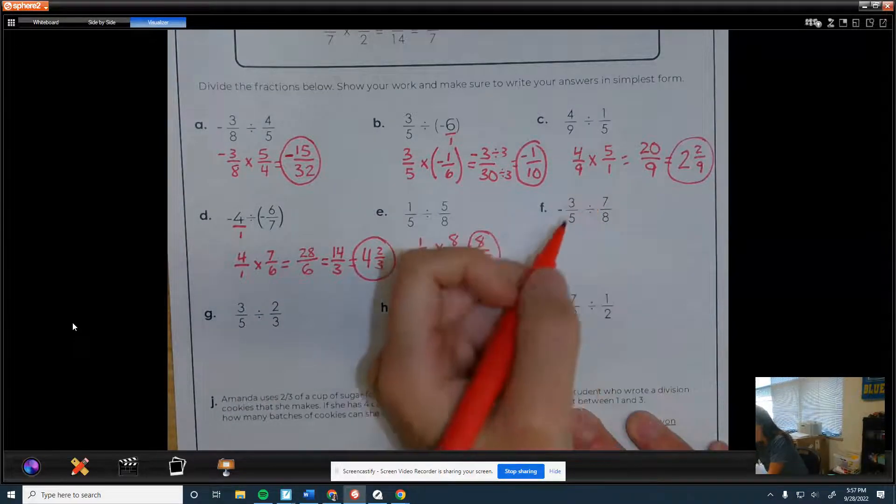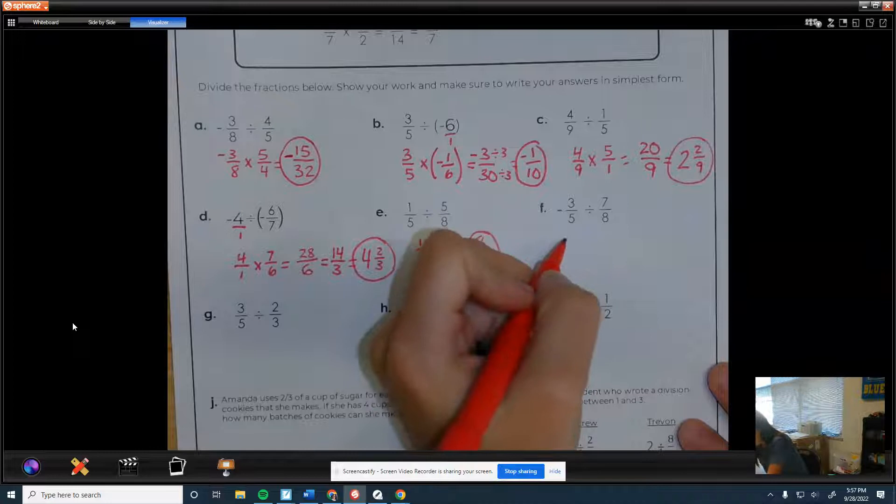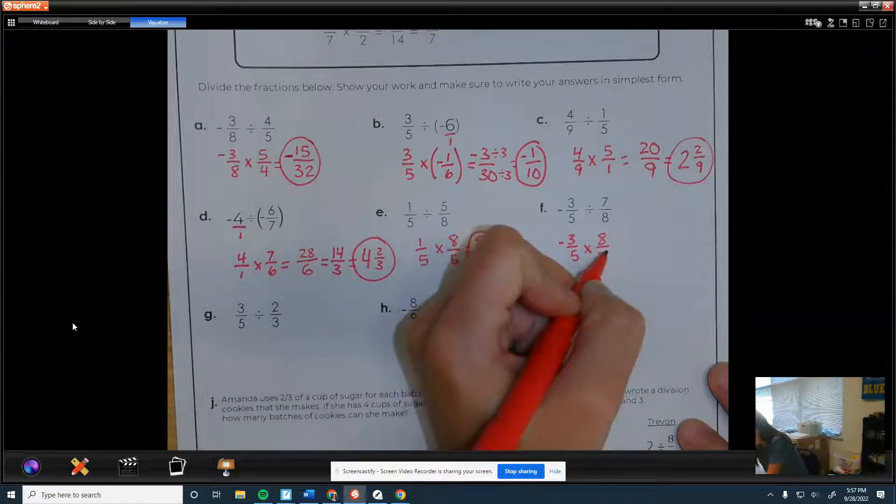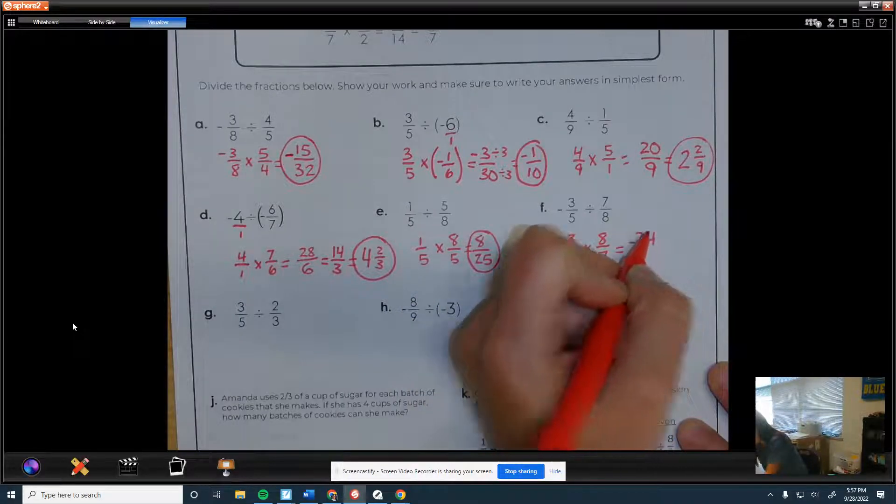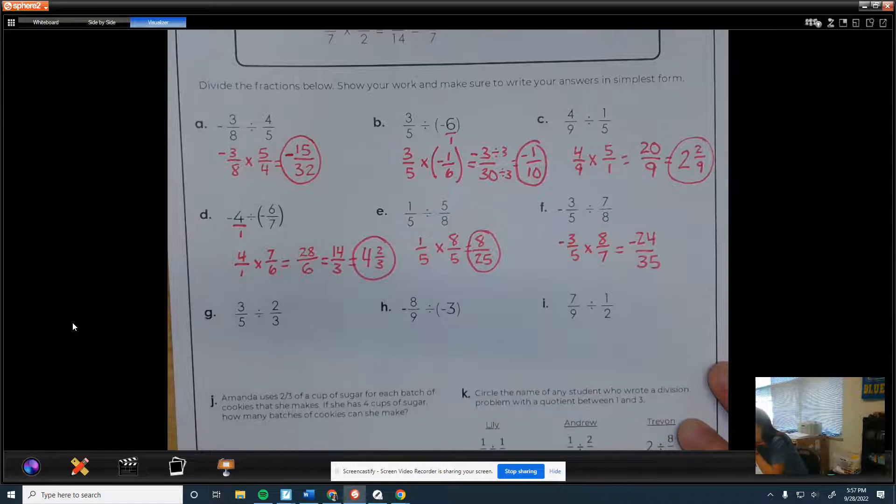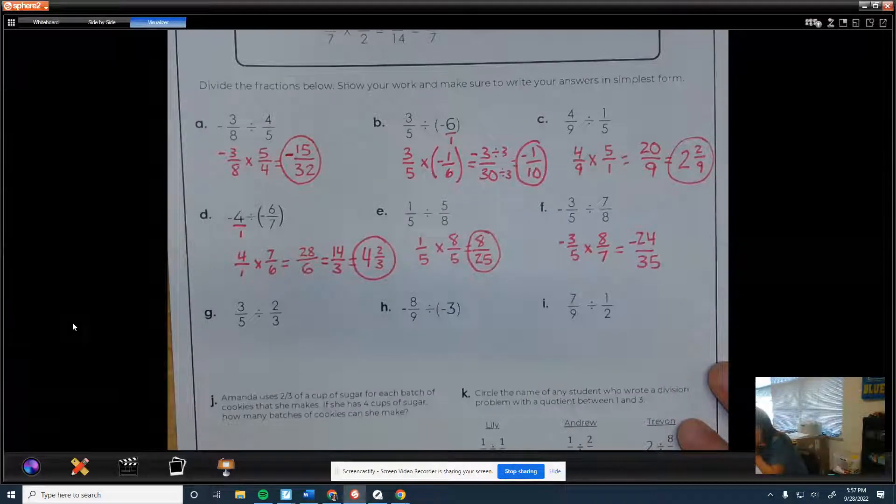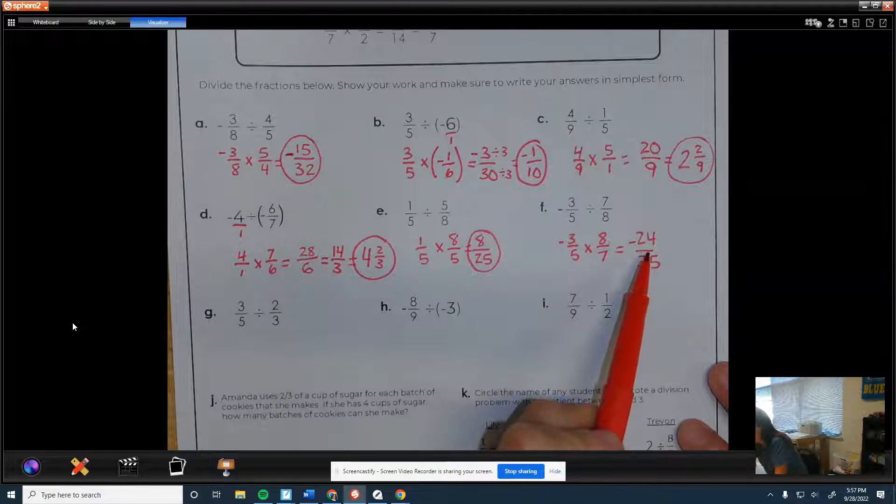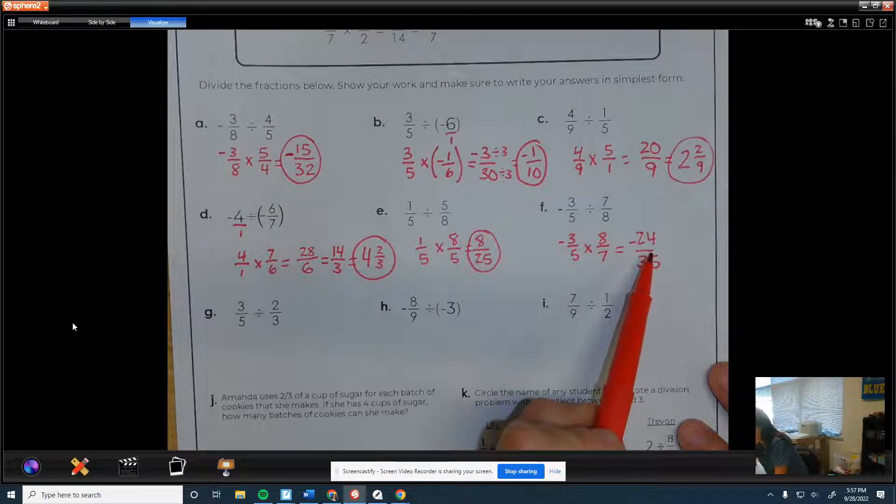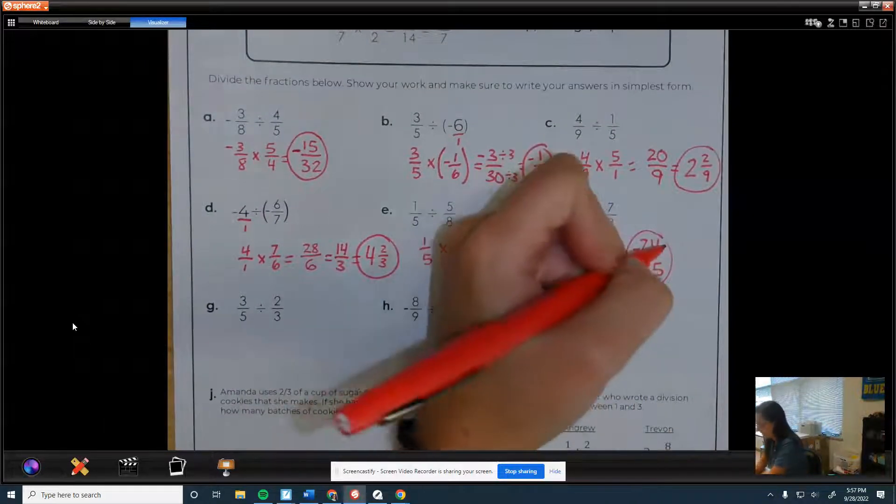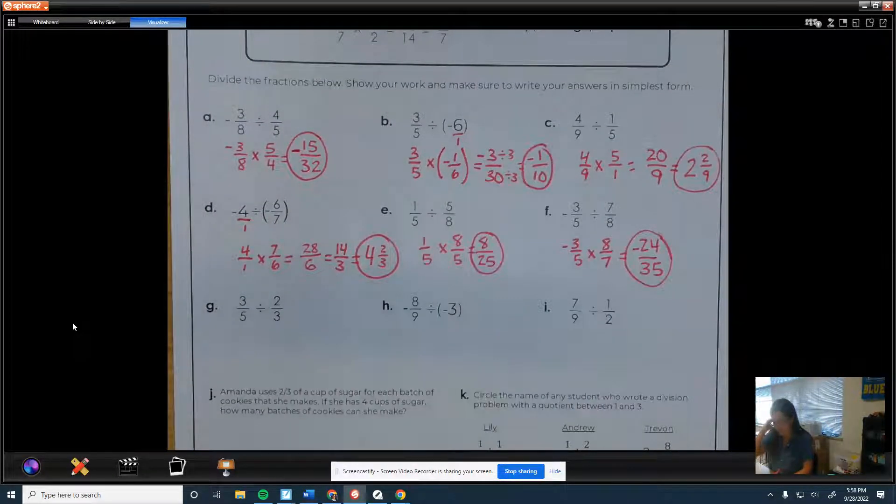Next one. Keep, change, flip. So that would be negative 24/35. I'm trying to think. I don't think you can simplify it because 24 is divisible by 2 and 12 and 3 and 8 and 6 and 4. But I don't think 35 is. So correct me if I'm wrong, but I'm going with that.